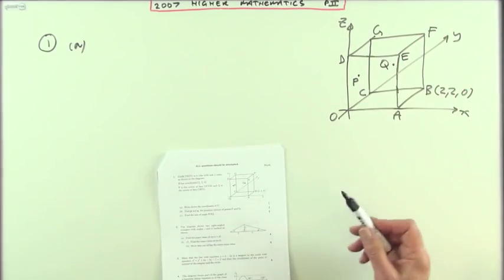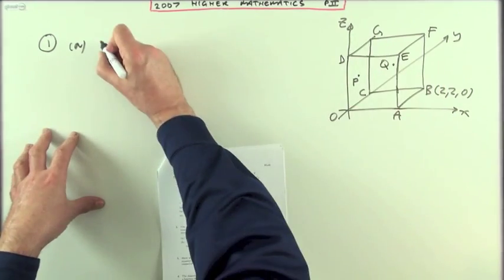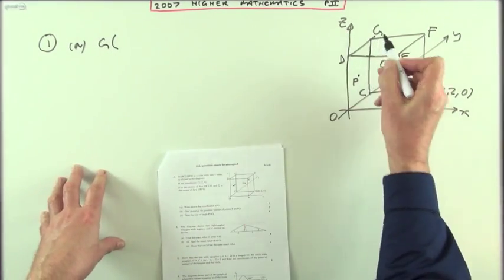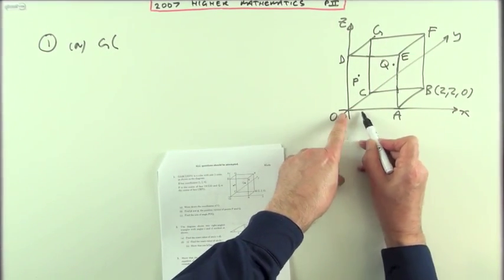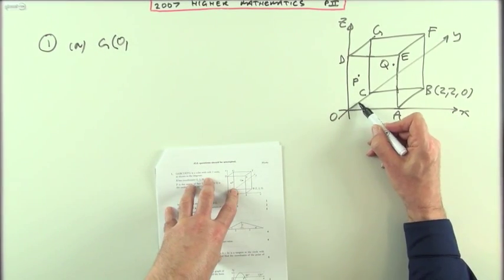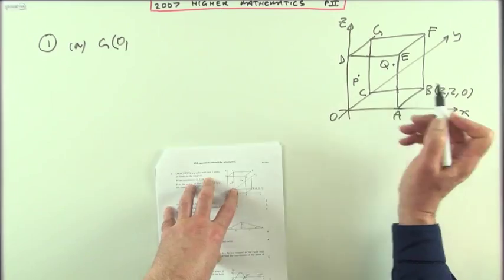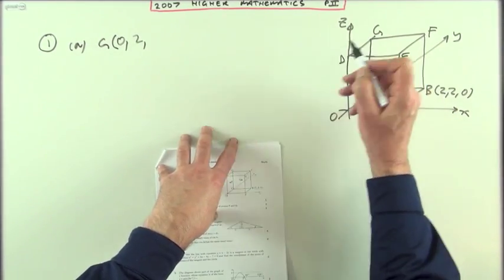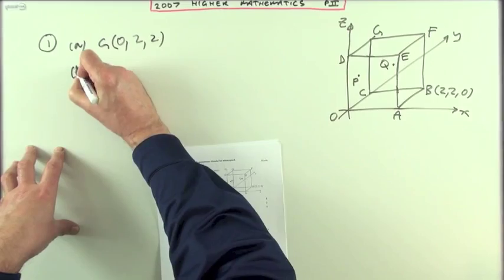Well, first of all, what are the coordinates of G? To get to point G, I'd start at the origin, don't go any distance along the x direction, but go back along the y-axis for the length of the cube, which is two, and then go up the full height of the cube, which is also two. So G is at (0, 2, 2).